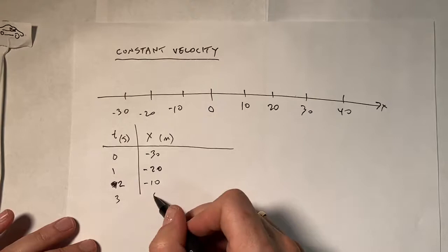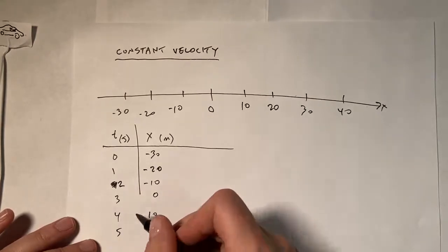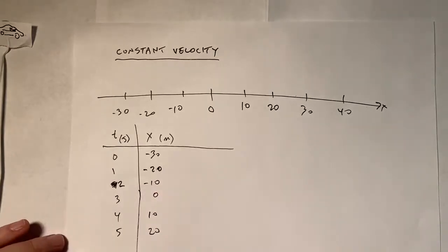Negative 10, three, zero, four, 10, five, 20. Like that. And it goes on.